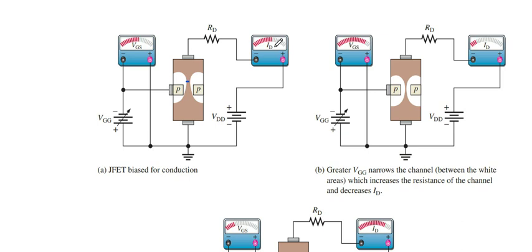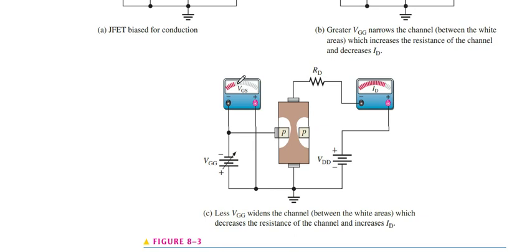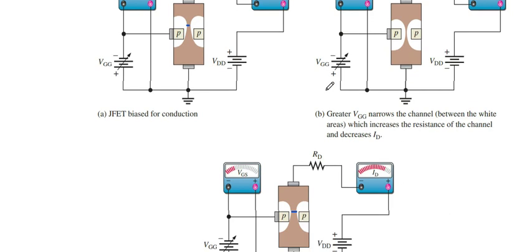So ID is small. As we increase more VGS or VGG like this diagram, then ID is going to decrease. Why? Because the path is very very narrow or very small, or thin as compared to this. Next, we decrease the VGS or VGG, the path increases, so drain to source path easily passes the current and ID increases.